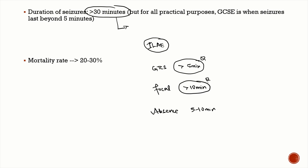These are the new duration cutoffs for considering a patient to be in status epilepticus, because we can't wait 30 minutes to start treatment — by that time the patient will develop permanent neurological deficits. So patients with continuous GTCs for more than 5 minutes or continuous focal seizures for more than 10 minutes are considered to be in status epilepticus. Remember, the mortality rate is very high — about 20 to 30 percent.